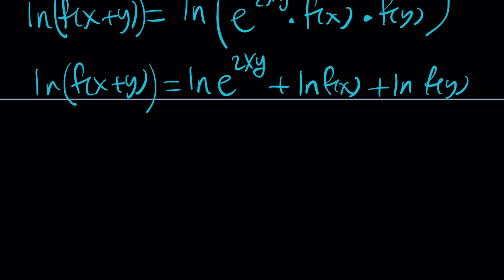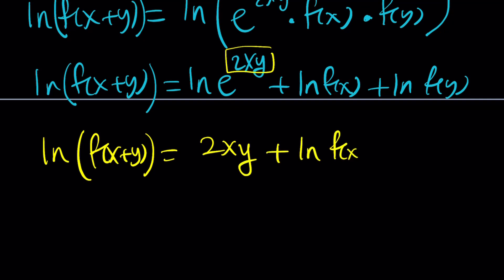Now this kind of looks a little better, but let's go ahead and bring this down. ln f of x plus y equals 2xy, because ln e is 1, plus ln f of x plus ln f of y. I'll not write parentheses because I think it's understood.